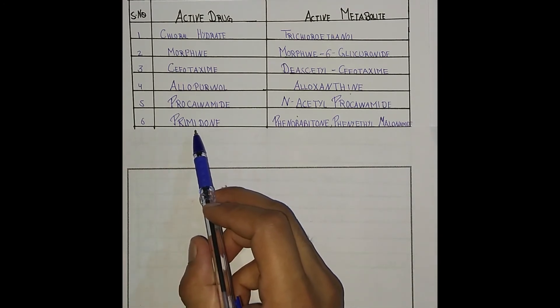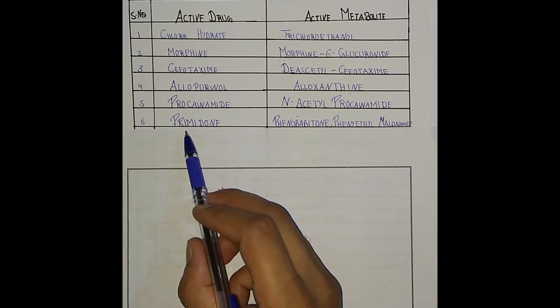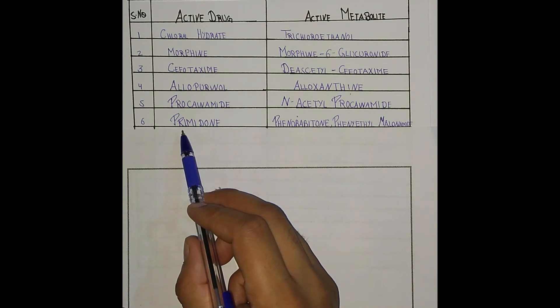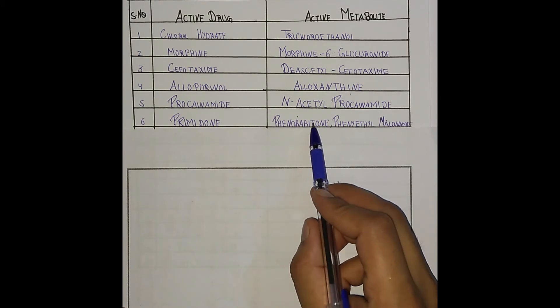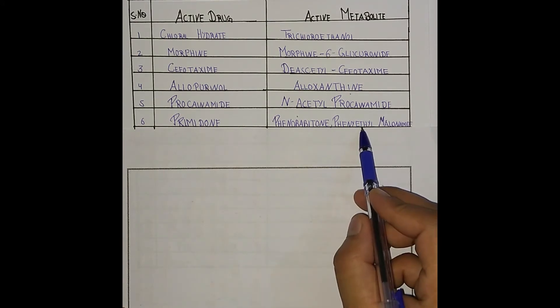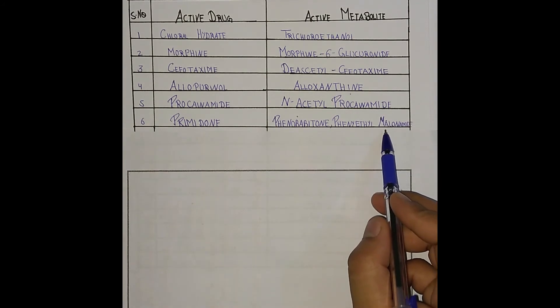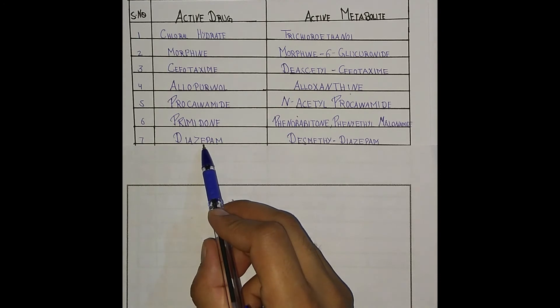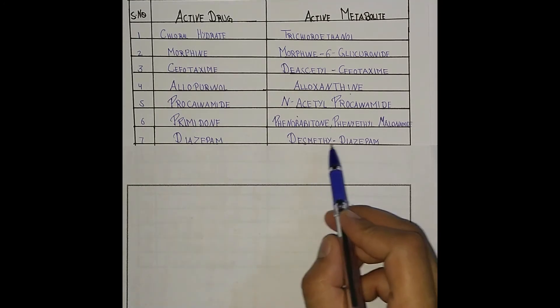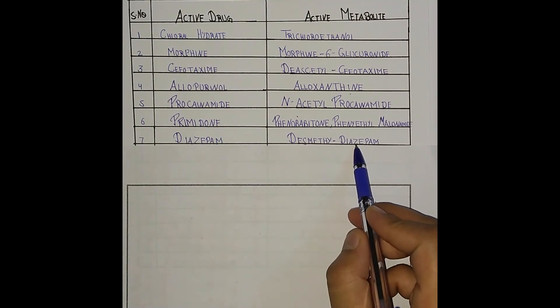This is a competitive exam question: what are the active metabolites of primidone? There are two active metabolites produced at a time - phenobarbitone and phenylethylmalonamide. Now next one is diazepam. Diazepam has desmethyl diazepam.